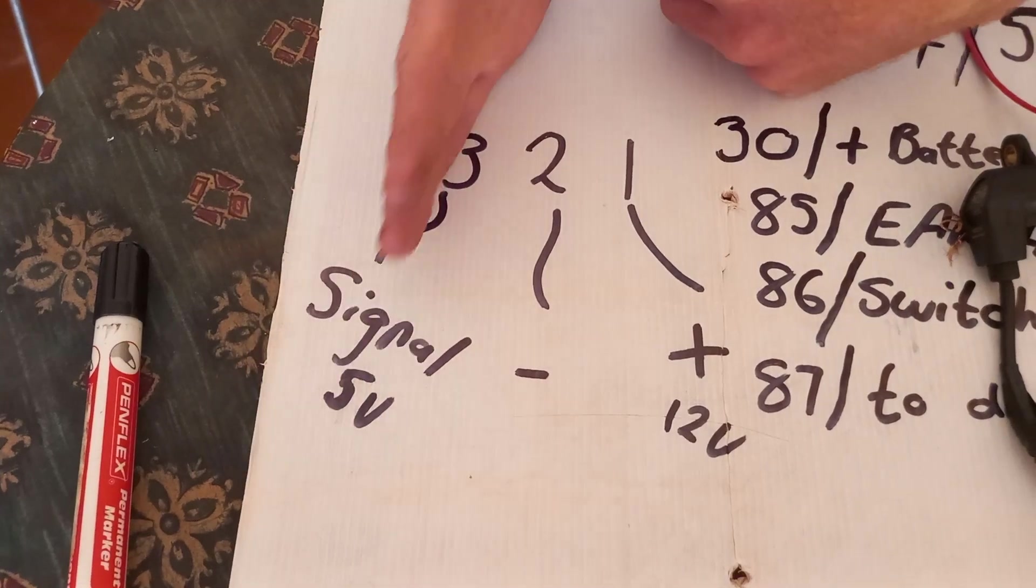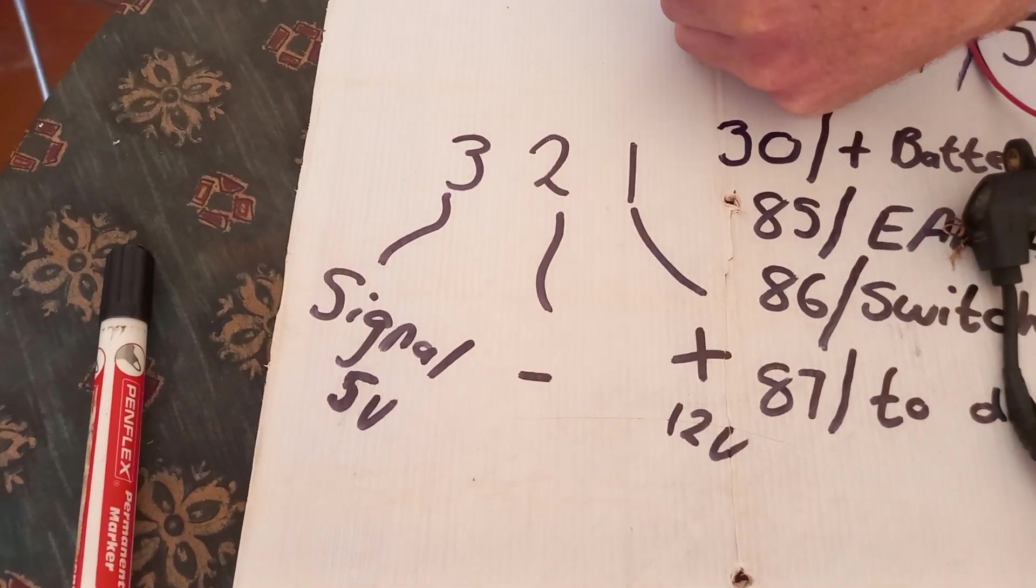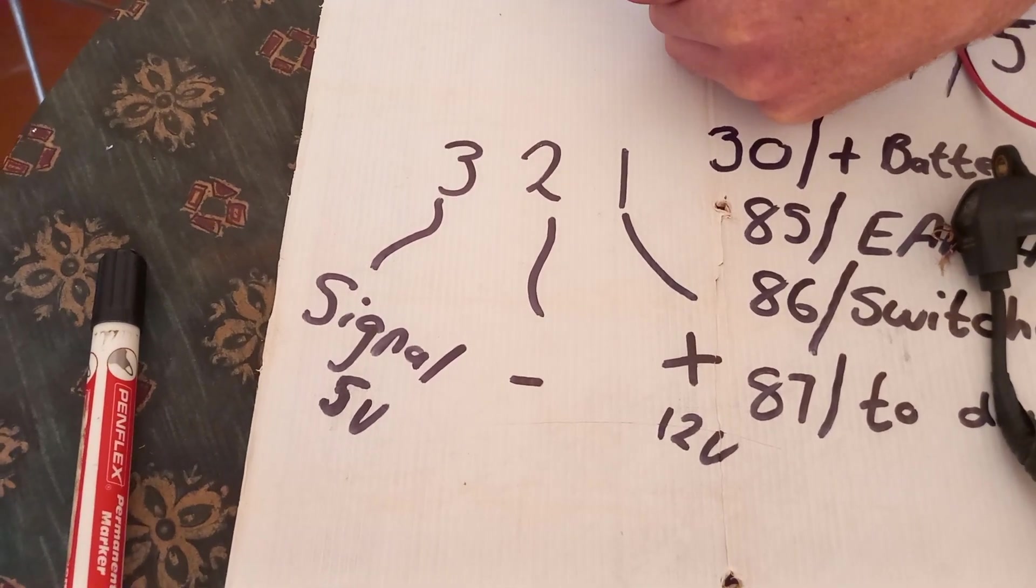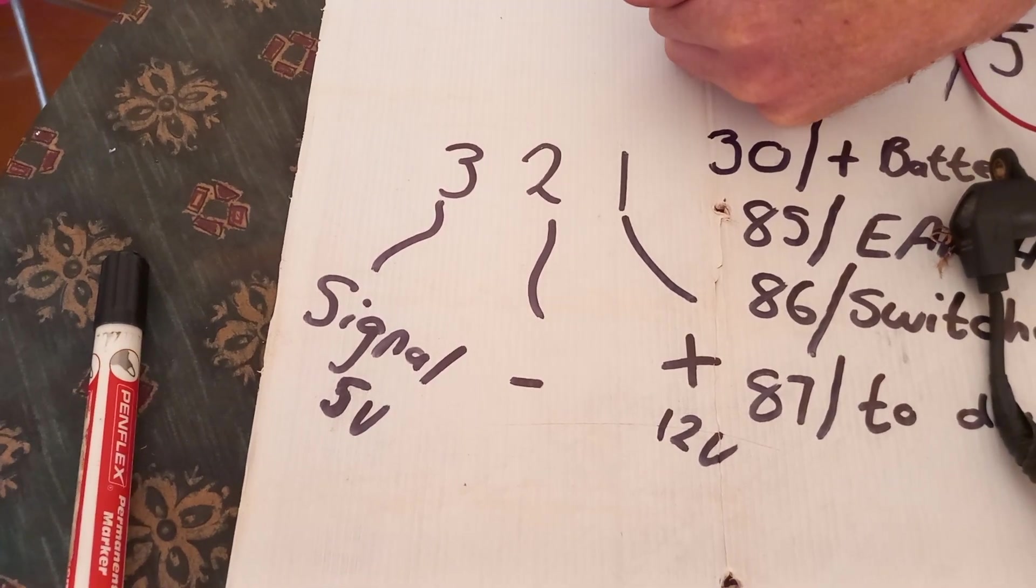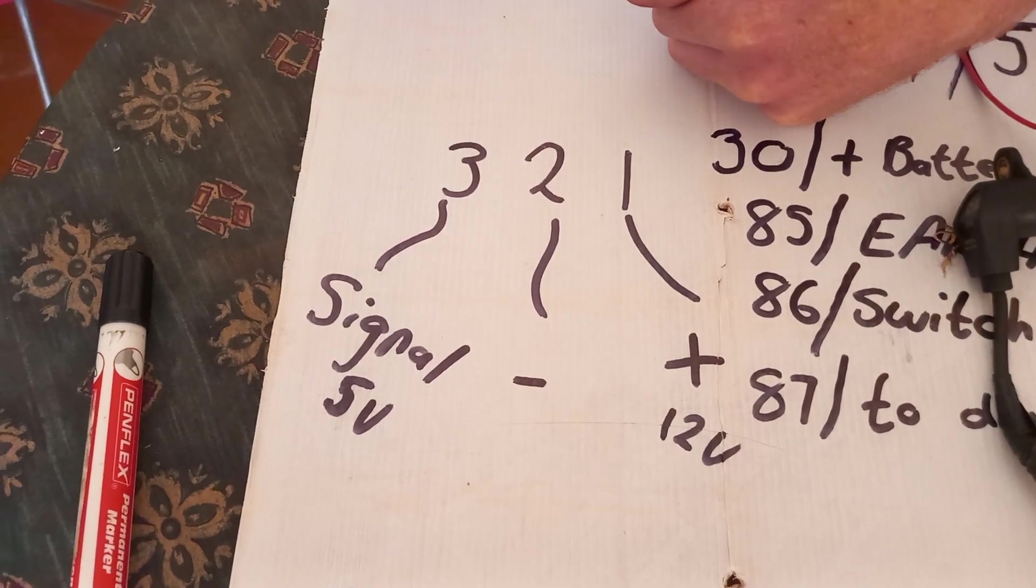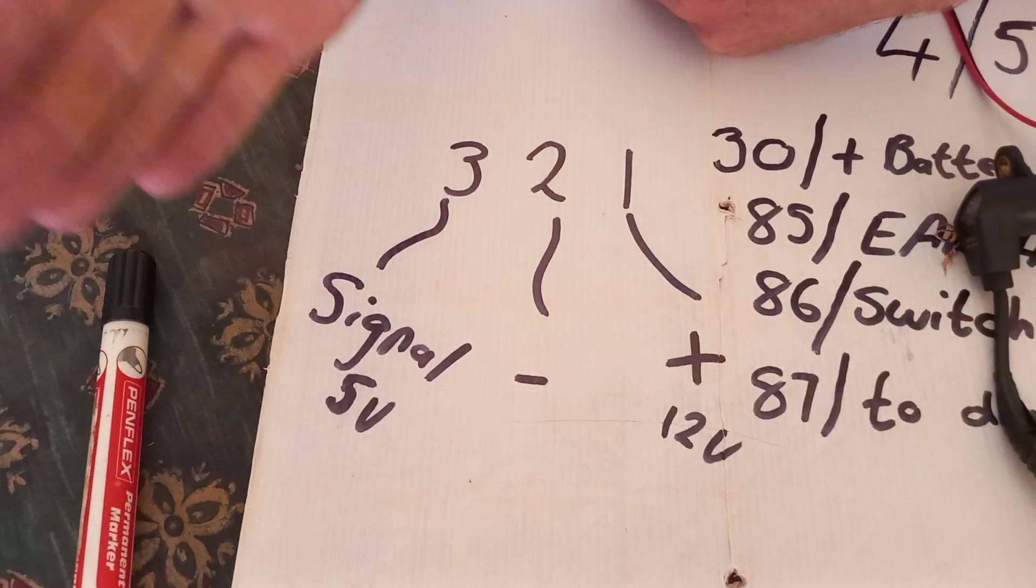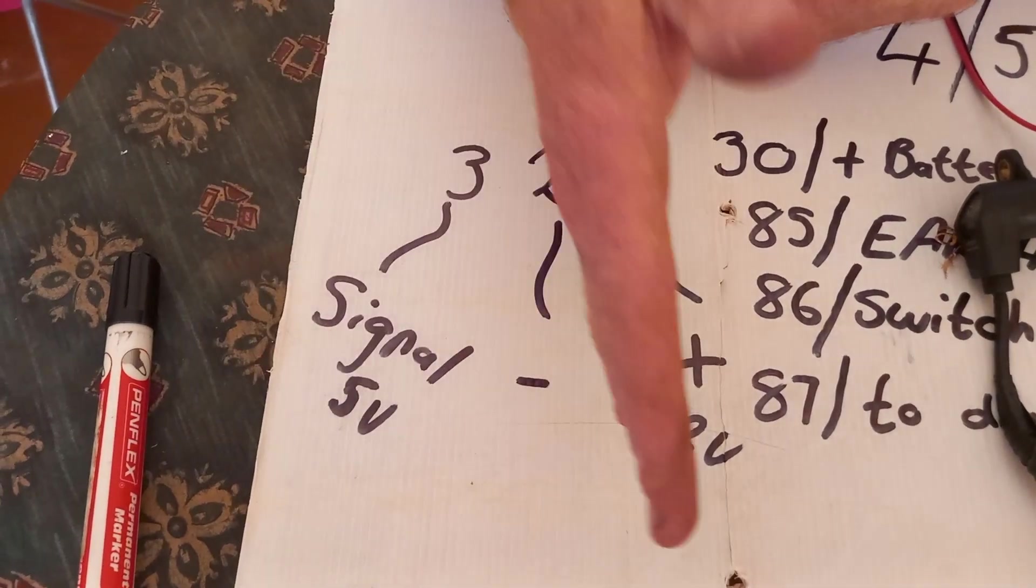If there's no five volt coming from this wire, if you trace it back to the computer box, the ECU, and it's not coming five volts from there, you know it's an ECU related problem and you must probably going to take it to auto electrician just to verify that.